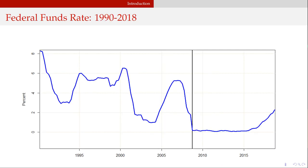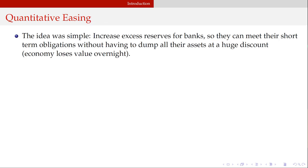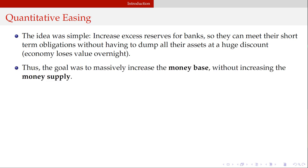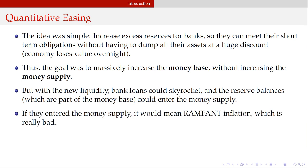Brief overview of the financial crisis and quantitative easing: here's the federal funds rate — this black line is when the financial crisis hit, boom, zero lower bound. The Federal Reserve purchased securities by creating excess reserve balances so financial institutions could meet short-term obligations without dumping assets at a huge discount. They increased the money base without screwing the money supply, gave banks more liquidity, and paid interest on excess reserves to prevent that money from entering the money supply — which would have generated rampant inflation.